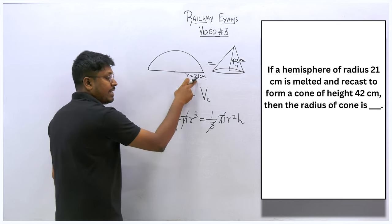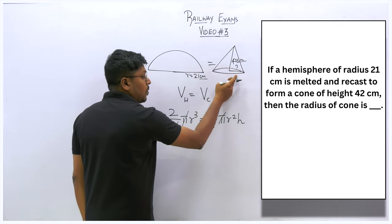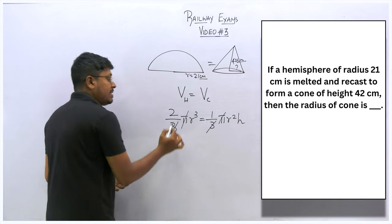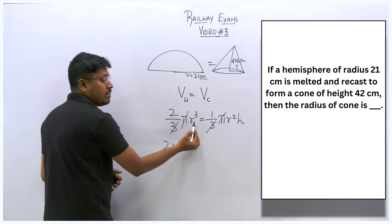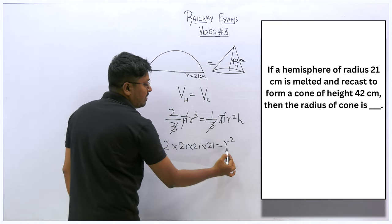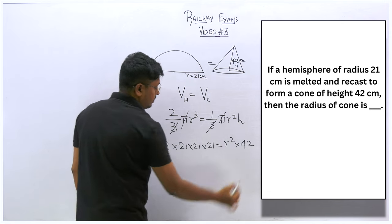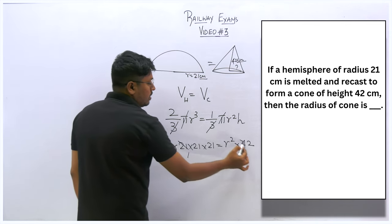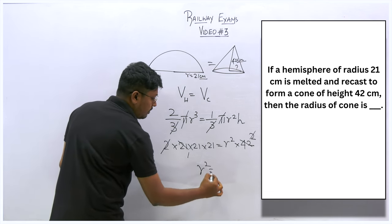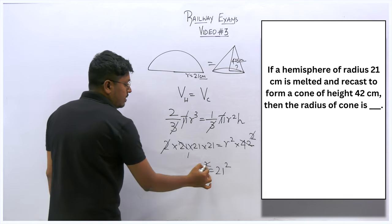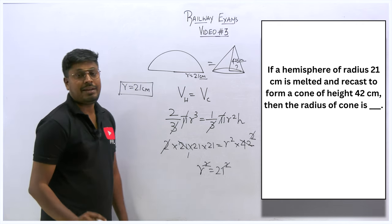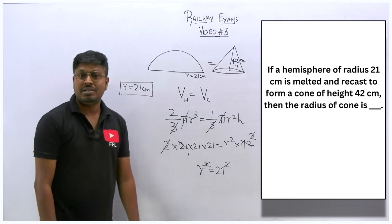Substitute the hemisphere radius: 21³ equals cone r² times height 42. Cancel 2 and 2 — we get r² = 21², so r = 21. The cone radius is 21 cm, which is the answer for the second question.